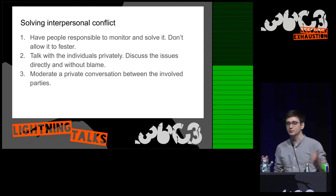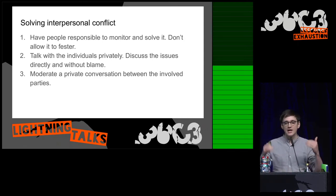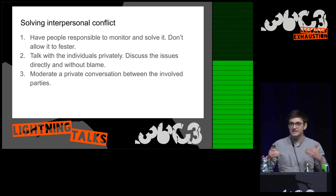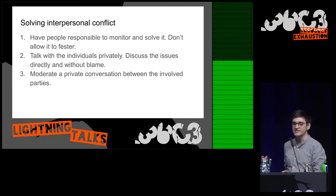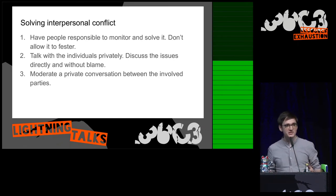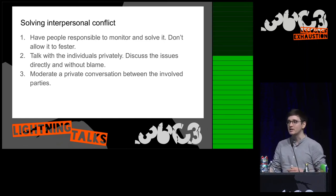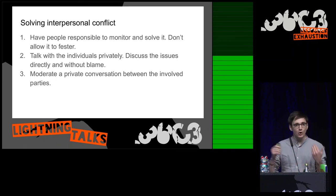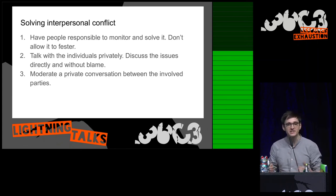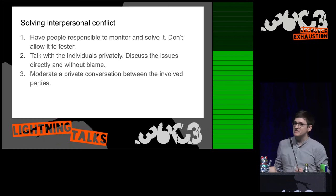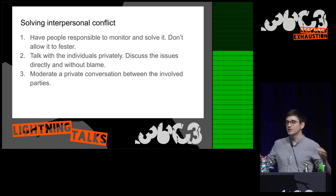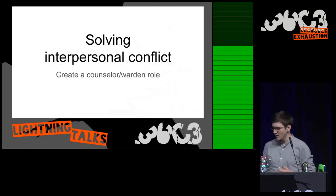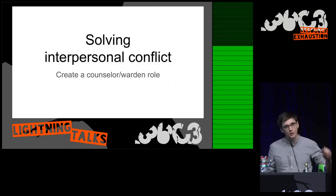So how do you actually solve this? First, you have to have people responsible to monitor and solve interpersonal conflict — literally assign people to it. In our hackerspace this is the role of the board. When conflict happens, first use the private talk pattern: talk with the individuals privately and discuss the issues directly and without blame. Then put them together and have a private conversation with all involved parties and moderate it. We've been doing this for six years and every single time we tried it, it succeeded in solving the issues. But it's very important that you make people responsible to do this, otherwise nobody will.